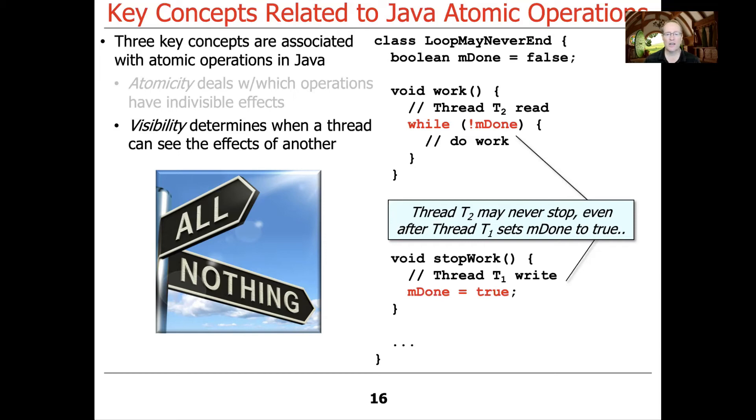And then thread T1 is going to call stop work. What stop work's trying to do is it's trying to set mDone to true. And of course, the intent of this, very obvious intent, we're trying to stop thread T2 from doing its work. Well, because we've defined this to be a Boolean and it's unsynchronized, we don't know if or when that change to mDone will be propagated from thread T1's local cache on some core to thread T2's local cache on another core. That's because we've done nothing to ensure that the change to mDone will be visible to the other thread. Because of the Java memory model that we talked about earlier, it may take a long time, perhaps forever, for that to be propagated.